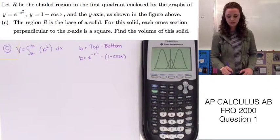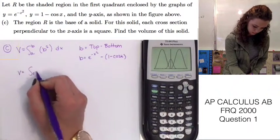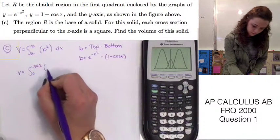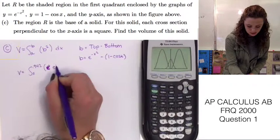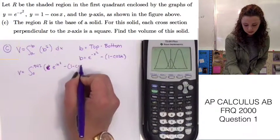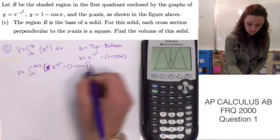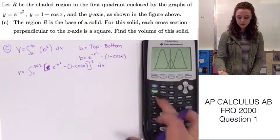And again, the limits are going to be the same as in part A and B. So V is equal to the integral from 0 to 0.942 of e to the negative x squared minus 1 minus cosine x. All of this will be squared dx. And again, we'll use math 9 to find the value of this.